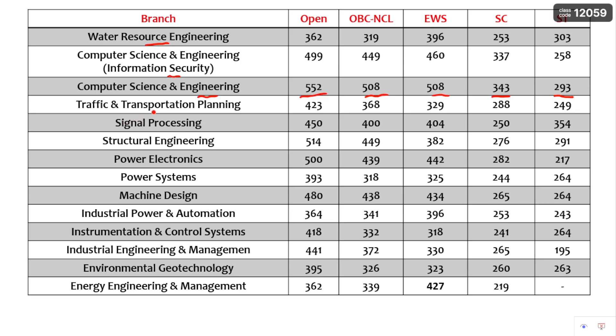And Traffic and Transportation Planning — you can see the cutoffs: 423 for Open, OBC non-creamy layer 368, EWS 329, SC 288, ST 249.